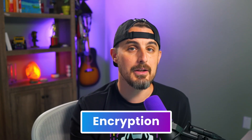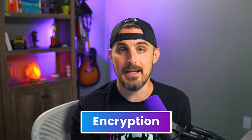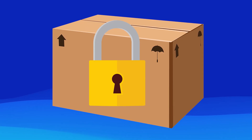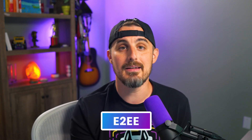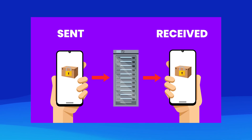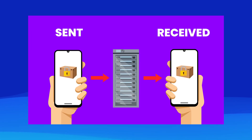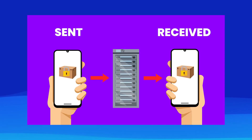Encryption is a fundamental concept in data security — it's the process of encoding information so that only authorized parties can access it. Building on that, we have E2EE, or end-to-end encryption, which ensures that only the communicating parties can read the messages between each other.